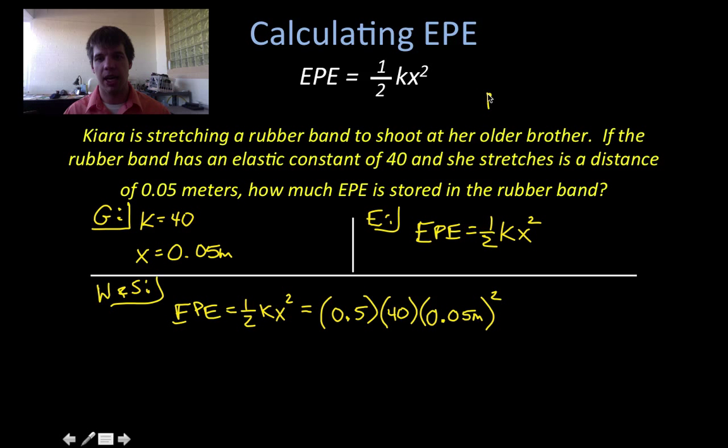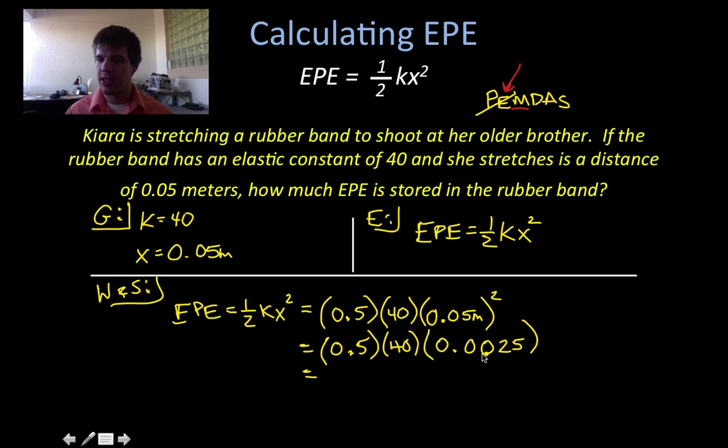So don't forget PEMDAS. And that tells me that I have to deal with the exponents before I deal with the multiplication. So I have to square my stretch distance before I do anything else. So I'll leave these first two numbers alone, leave them exactly the same, 0.5 and 40. And I'm going to square the 0.05. When I do that, I get 0.0025. And now that I've dealt with my exponents, I can go ahead and multiply. So I'll multiply 0.5 by 40 and I get 20. Multiply that by this, and I get ultimately 0.05 joules of EPE.